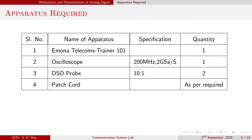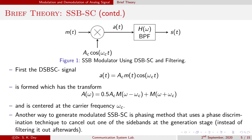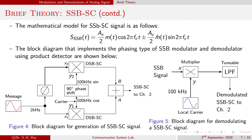Generally, standard AM or DSBSC techniques do not use the frequency spectrum efficiently because they both require a transmission bandwidth of up to 2B Hz, where B is the bandwidth of the baseband modulated signal. By using SSBSC we can improve bandwidth efficiency, because in the SSB signal we transmit either the upper sideband or lower sideband, since both contain the same information. Thus, using a single sideband we can transmit and retrieve data at the receiver.